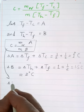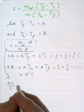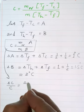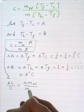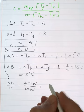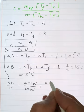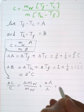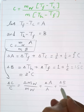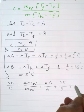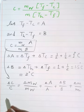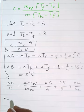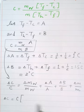Error of c over c is equal to error of m_water over m_water plus error of A over A plus error of B over B plus error of m over m. So error of c is equal to c multiply by all of this.